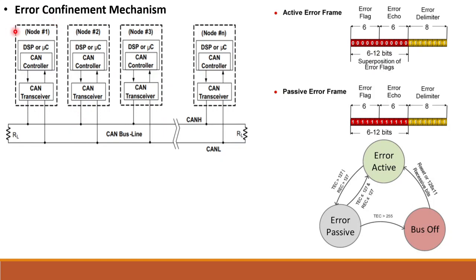In summary, the error confinement mechanism disconnects a node from the network when TEC exceeds 255. The node rejoins when it receives 128 × 11 recessive bits or after a controller restart. This is how CAN error confinement is implemented. Thank you for watching.